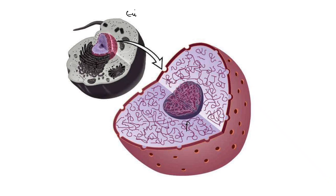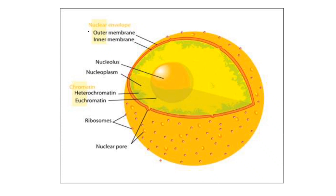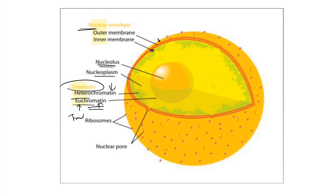This is a eukaryotic cell zoomed in to show the nucleus. Here you can see the nuclear envelope with an outer layer and an inner layer. Inside there is the nucleolus, liquid nucleoplasm, and chromatin. There is also heterochromatin and euchromatin — euchromatin means true chromatin. Ribosomes are attached on the outside of the nucleus.